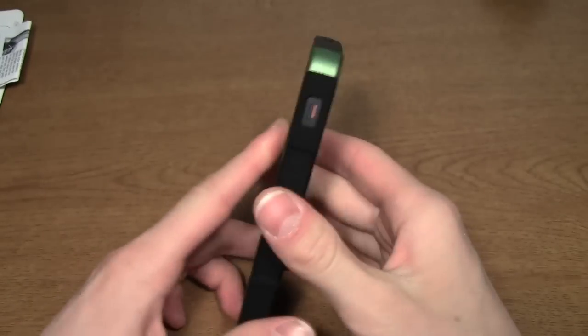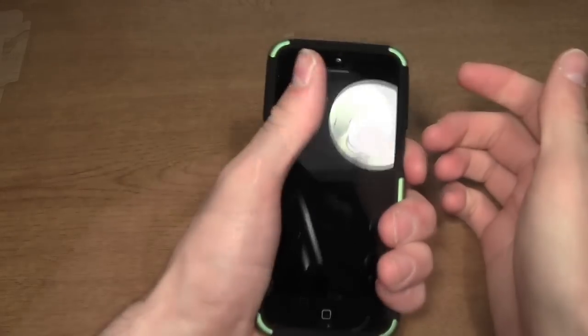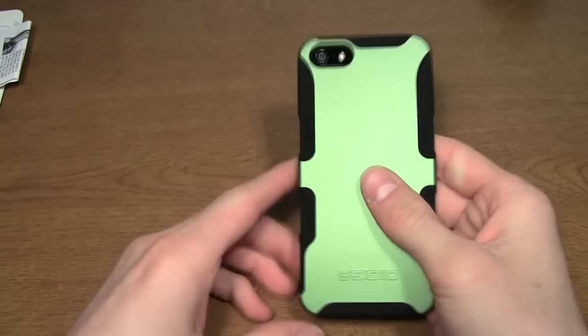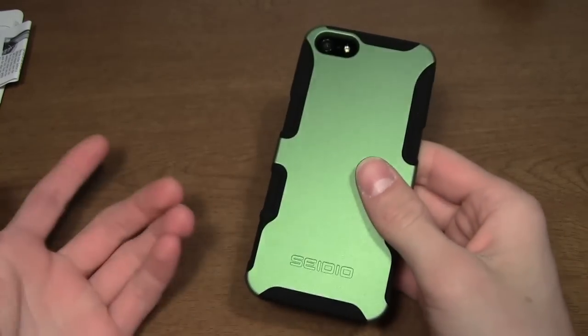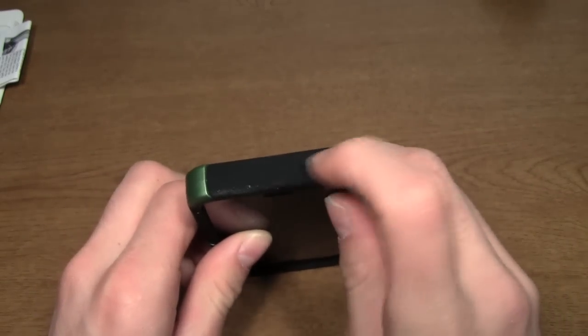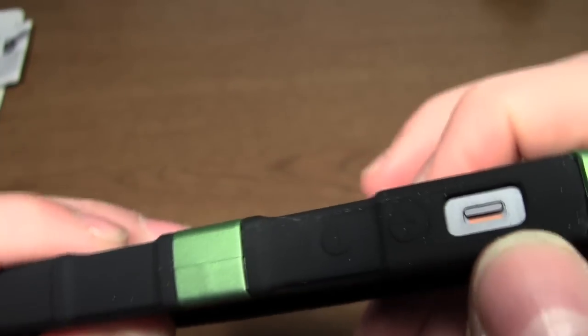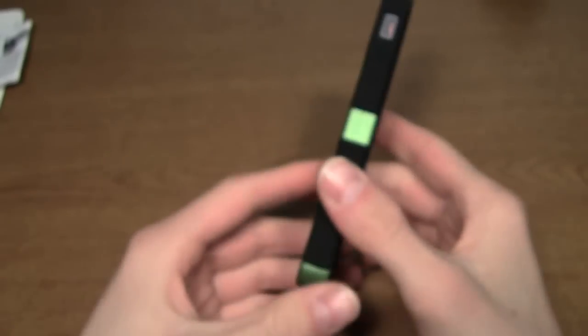It doesn't add that much bulk to the phone. You know it feels pretty good in the hand. It's got these ridges on the sides that make it really easy to grip. I haven't had any issues sliding this in and out of my pocket like some other silicone cases can sometimes have issues with. The buttons are not cutouts but you can see that there's buttons there, and it's got the cutout for the mute switch which is nice.